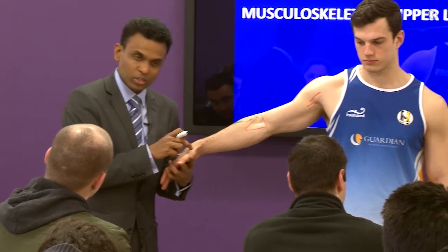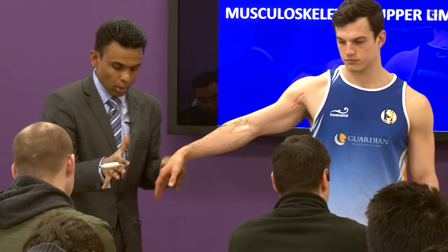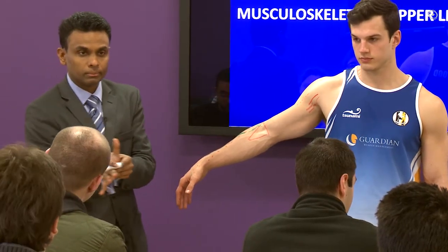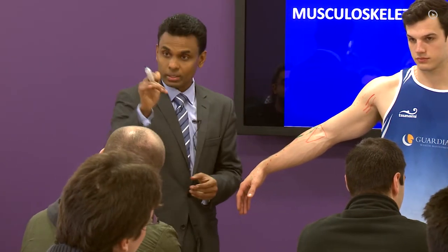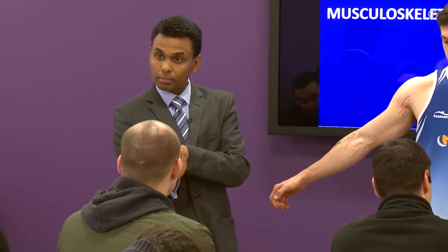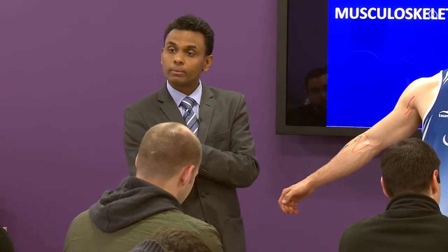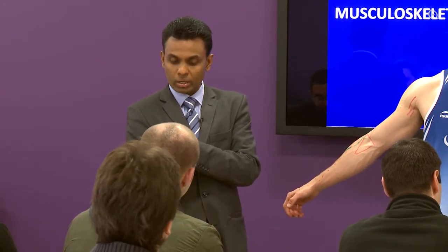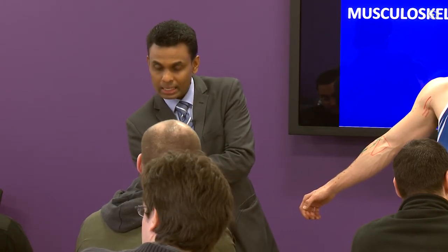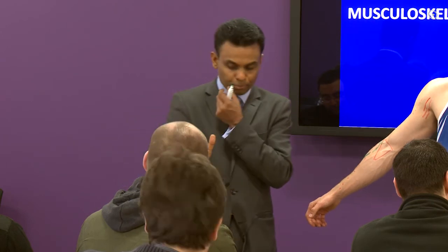The bony prominences you can feel in the snuff box: clearly you'll feel the scaphoid. What else? Trapezium. Then the base of the first metacarpal and the radial styloid — those are the four bones palpable in the snuff box. If you look at the anatomical specimen, these tendons lie on the sides.